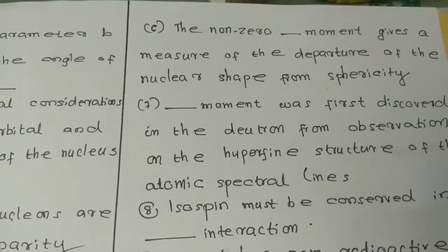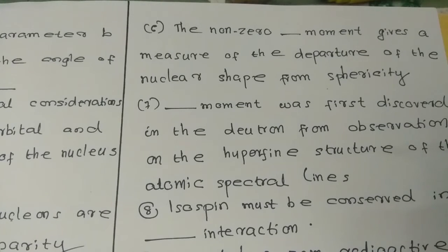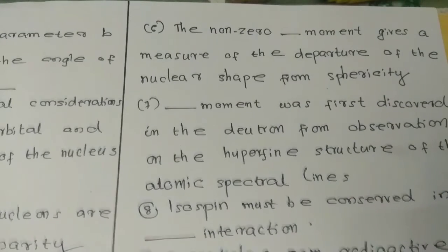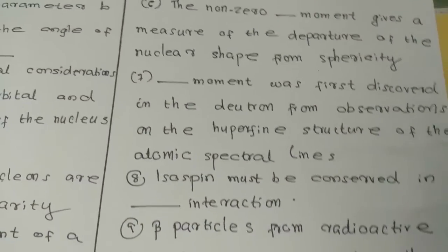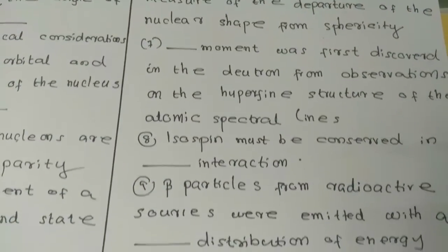Question number six: the non-zero dash moment gives a measure of the departure of the nuclear shape from sphericity. Question number seven: dash moment was first discovered in the deuteron from observations on the hyperfine structure of the atomic spectral lines.